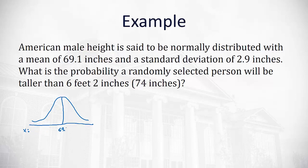The mean of 69.1, we're interested in 74 inches, which is off to the right. And we want to be taller than 74 inches. So this tells us that we are even further off to the right than that. We want the area in that right tail.